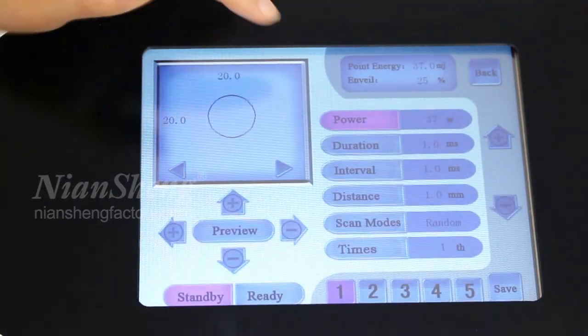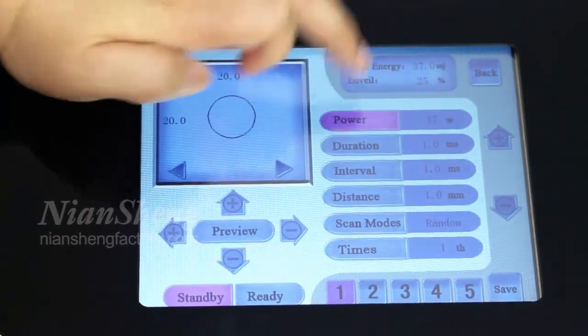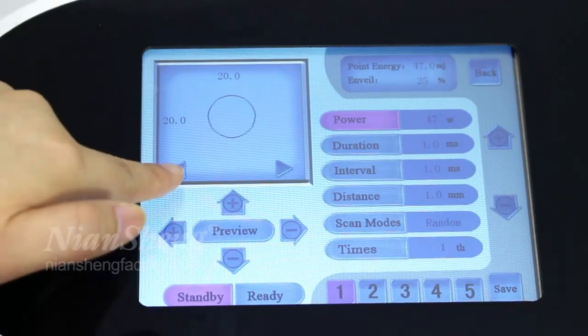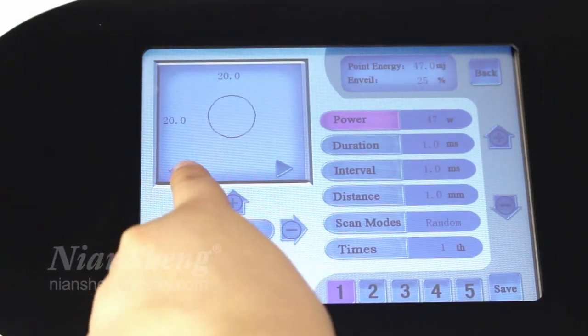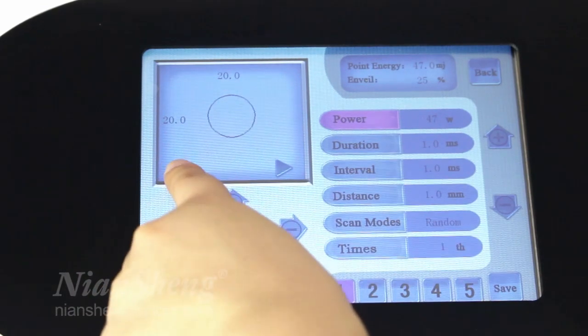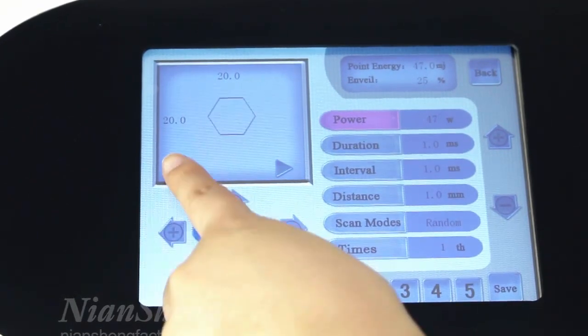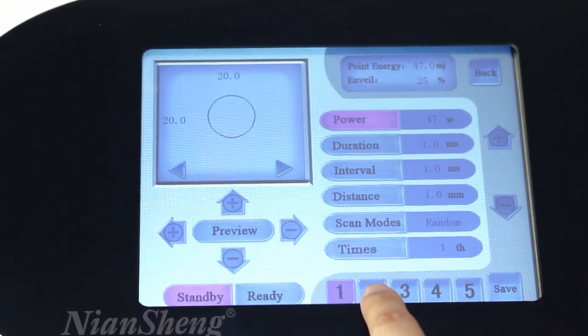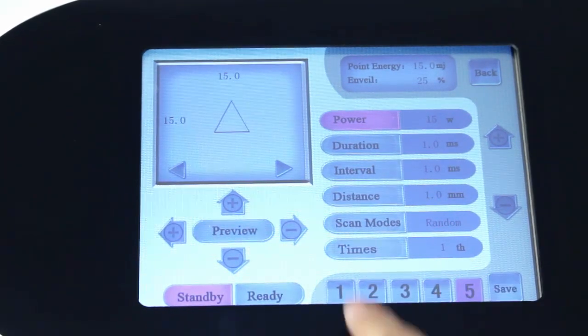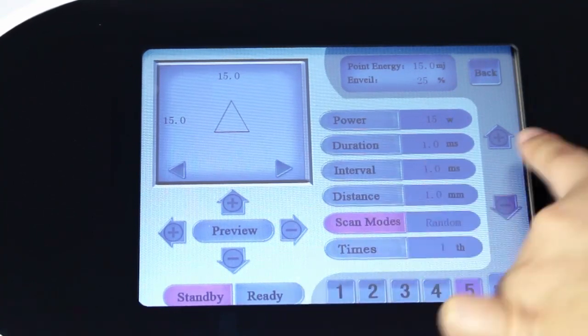Turn on this part and you can adjust the power. And this one for the shape. You can see they have different shapes for this function. Or you can choose here to choose different shapes. And this one for the mode here. You can choose different modes.